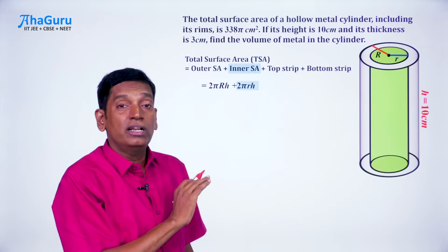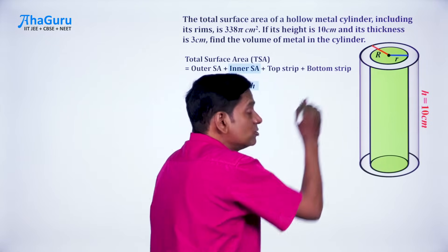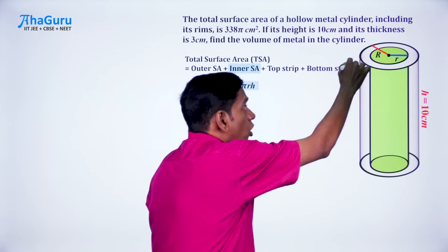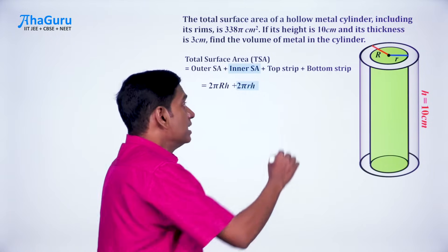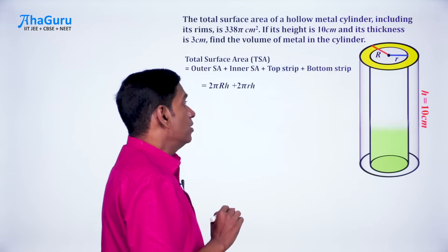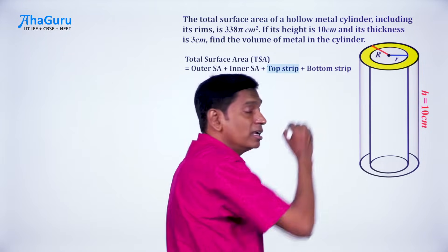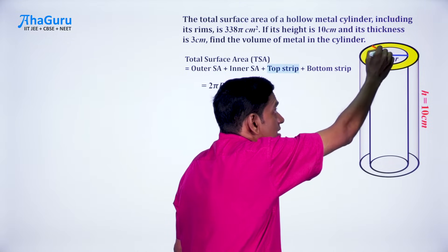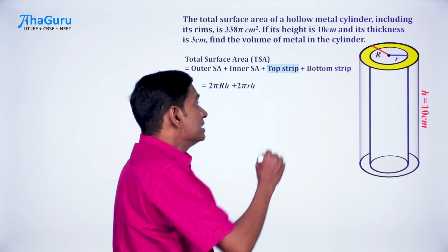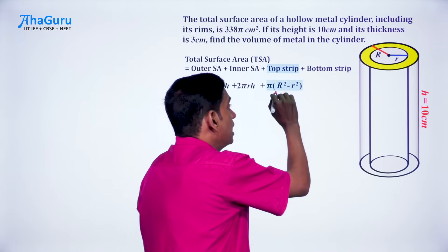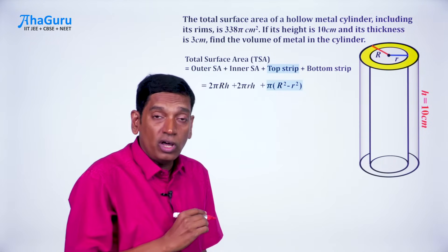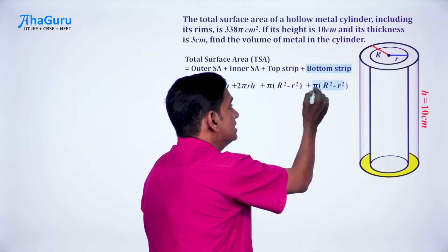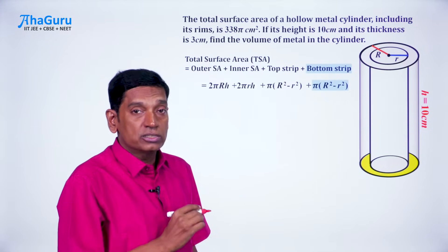But this is not all. The problem says 'including its rims,' meaning the top and bottom portions. The top strip is the difference in area between the outer circle and the inner circle, so that area is π(R² - r²). Similarly, the bottom strip also has the same area: π(R² - r²).